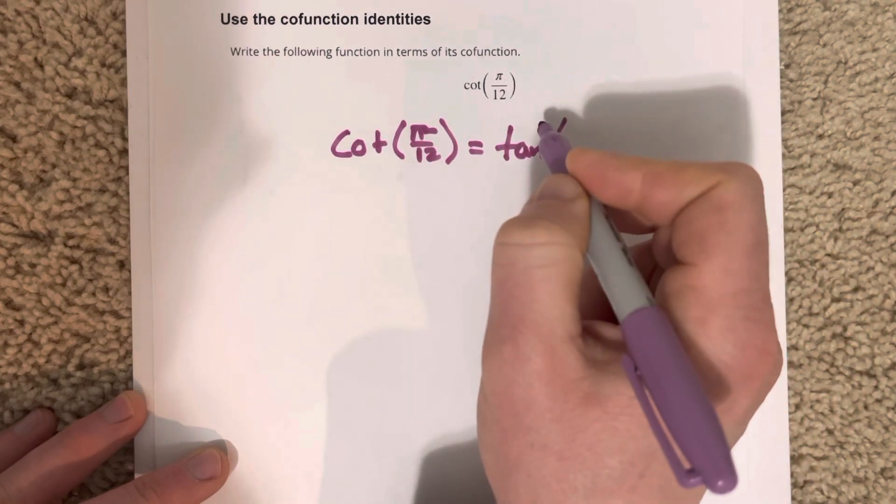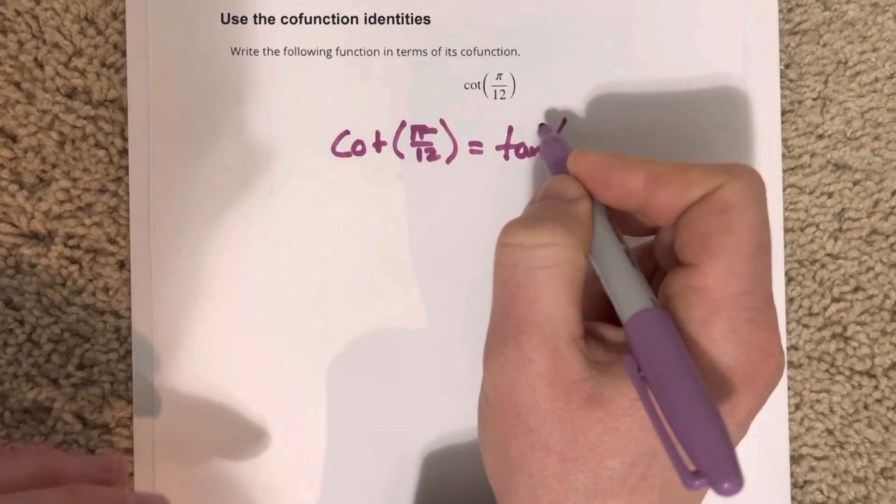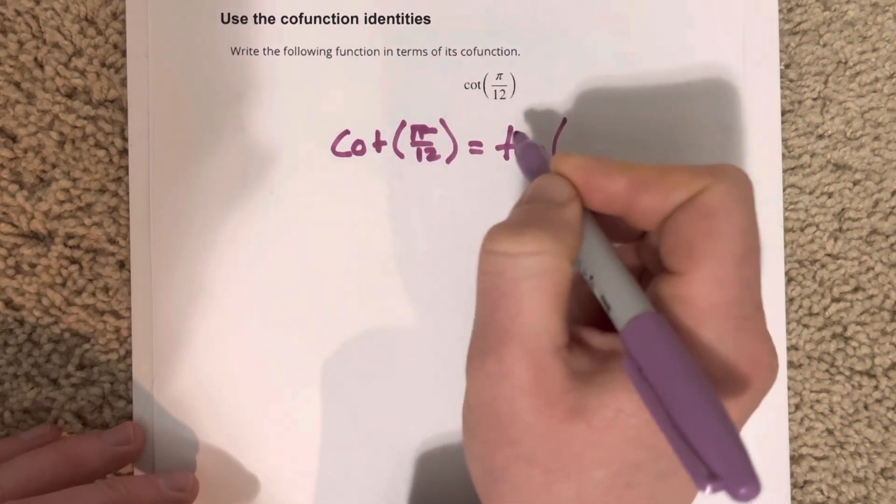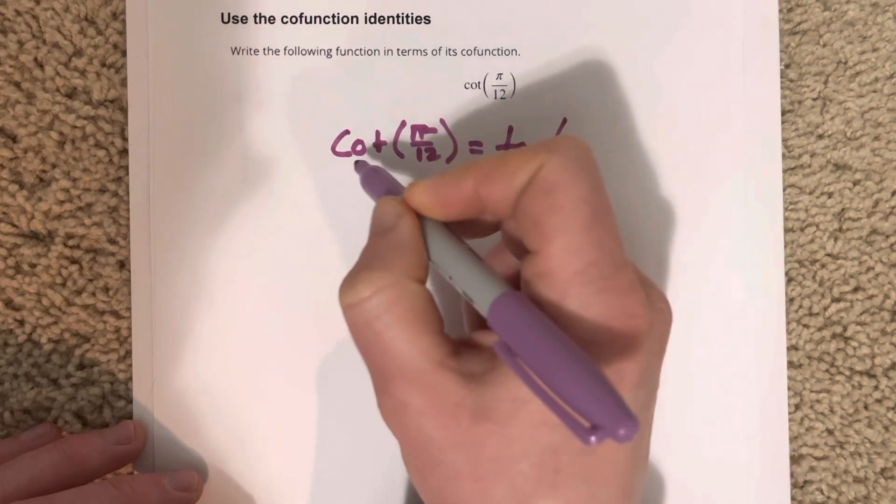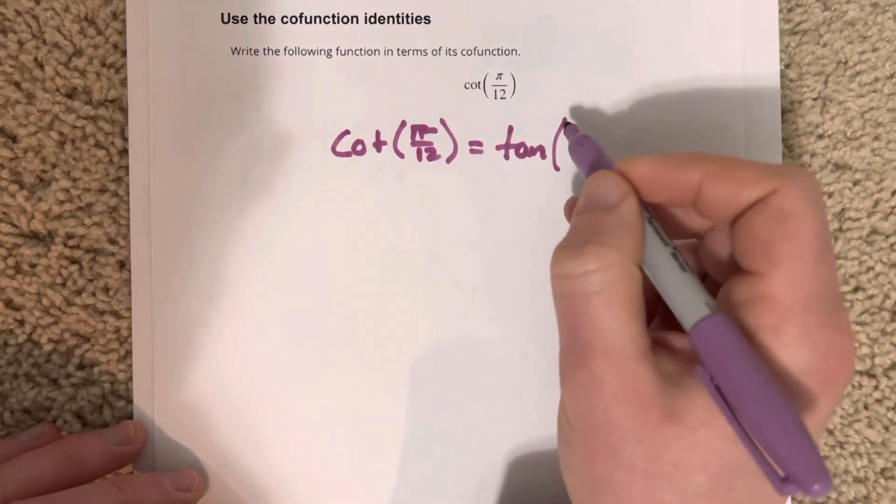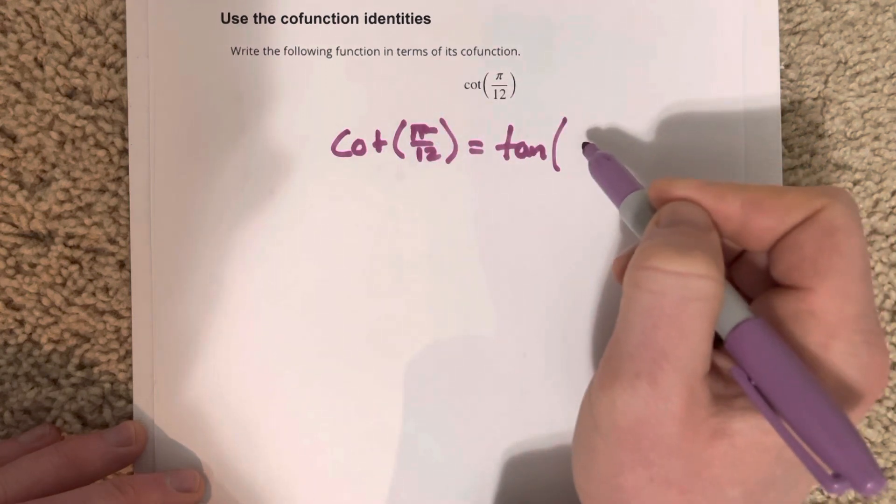If I'm in the same quadrant, if I have cotangent and tangent and I'm talking about the same quadrant, there are always two spots in the quadrant where cotangent and tangent are equal to each other. And those two spots are where the angles add up to 90 degrees.